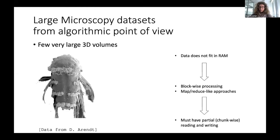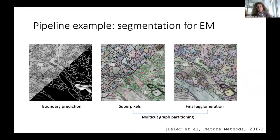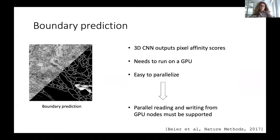If you want to see what is actually happening and why we have to support that, look at a pipeline example for segmentation of prediction microscopy. All these steps are updated from the paper from 2017, but the essence stays the same. You have the raw data, then you do boundary prediction — which happens with a neural network usually — you break that up into superpixels, and you do a final agglomeration. If you look at the boundary prediction part, this is usually done with a neural network, which outputs a multi-channel output — in our case, pixel affinity scores.